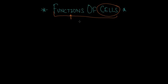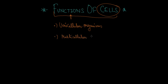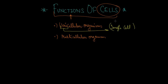In the previous video we learned that there are two types of organisms. One is unicellular organisms. Unicellular means a single cell — the organism is made of just one single cell. Examples of unicellular organisms are amoeba and paramecium.